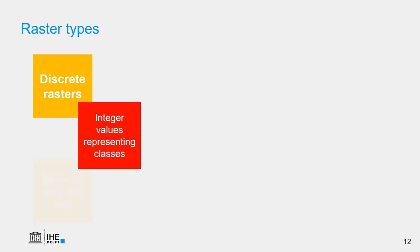We can think of layers representing land use or a soil map, for example. This type of data is very comparable with polygons and can be easily converted between one and the other.